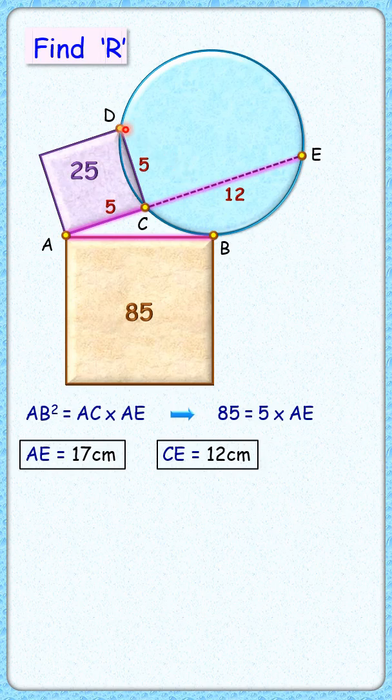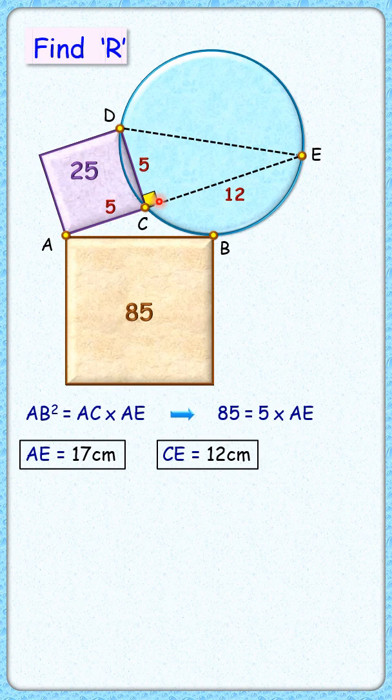Now let's join DE here. This angle C is 90 degrees, and we know that in a circle, if a chord subtends an angle of 90 degrees at the circumference, then it's a diameter.